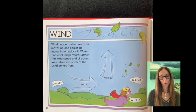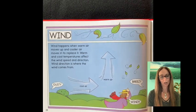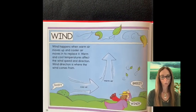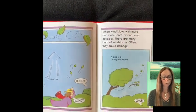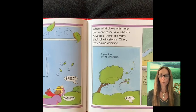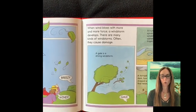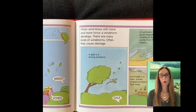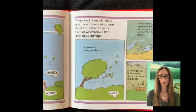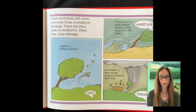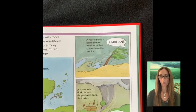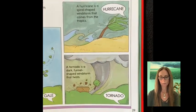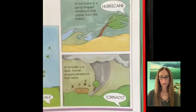Wind happens when warm air moves up and cooler air moves in to replace it. Warm and cool temperatures affect the wind speed and direction. Wind direction is where the wind comes from. When wind blows with more and more force a windstorm develops. There are many kinds of windstorms. Often they cause damage. A gale is a strong windstorm. A hurricane is a spiral shaped windstorm that comes from the tropics. A tornado is a dark funnel shaped windstorm that twists.